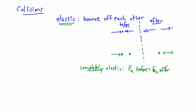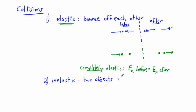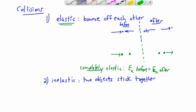So we have collisions that are either elastic — either completely elastic or not completely elastic — or completely inelastic, which is the opposite. In a completely inelastic collision, the two objects stick together. They don't have to be literally sticky; in a car crash, for example, the wreckage gets mangled and the cars become connected. So the two objects stick together in an inelastic collision.